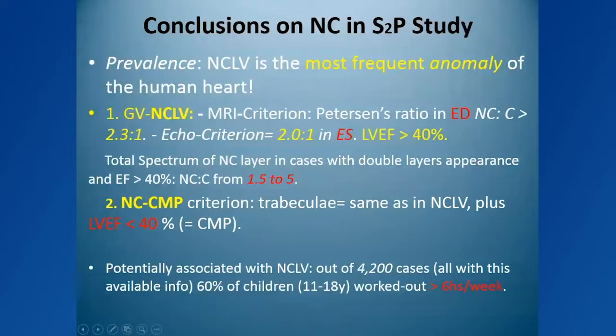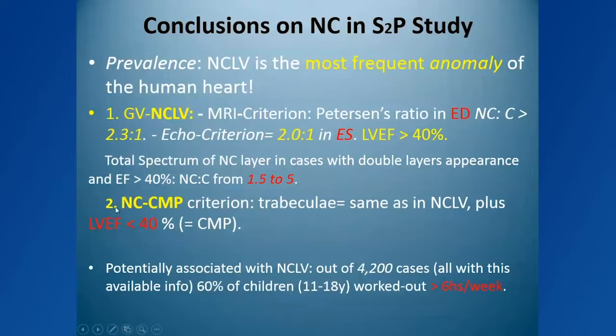The Peterson criterion of 2.3-to-1 non-compaction to compaction layer was used in our study. The echocardiographic criterion of 2.0-to-1 is observed in end systole, which we will describe as a major technical mistake. Importantly, what defines non-compaction cardiomyopathy is not so much the presence of trabeculations, but the presence of a left ventricular ejection fraction less than 40%, which basically defines cardiomyopathy.